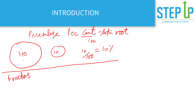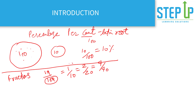10 percent is nothing but 10 by 100 — the base is 100. This can be simplified as 1 by 10. It can also be expressed as 2 by 20, 3 by 30, 4 by 40, and so on — all simplify to 1 by 10. So the concept of percentage and fractions is similar; you can express a percentage as a fraction or a fraction as a percentage.